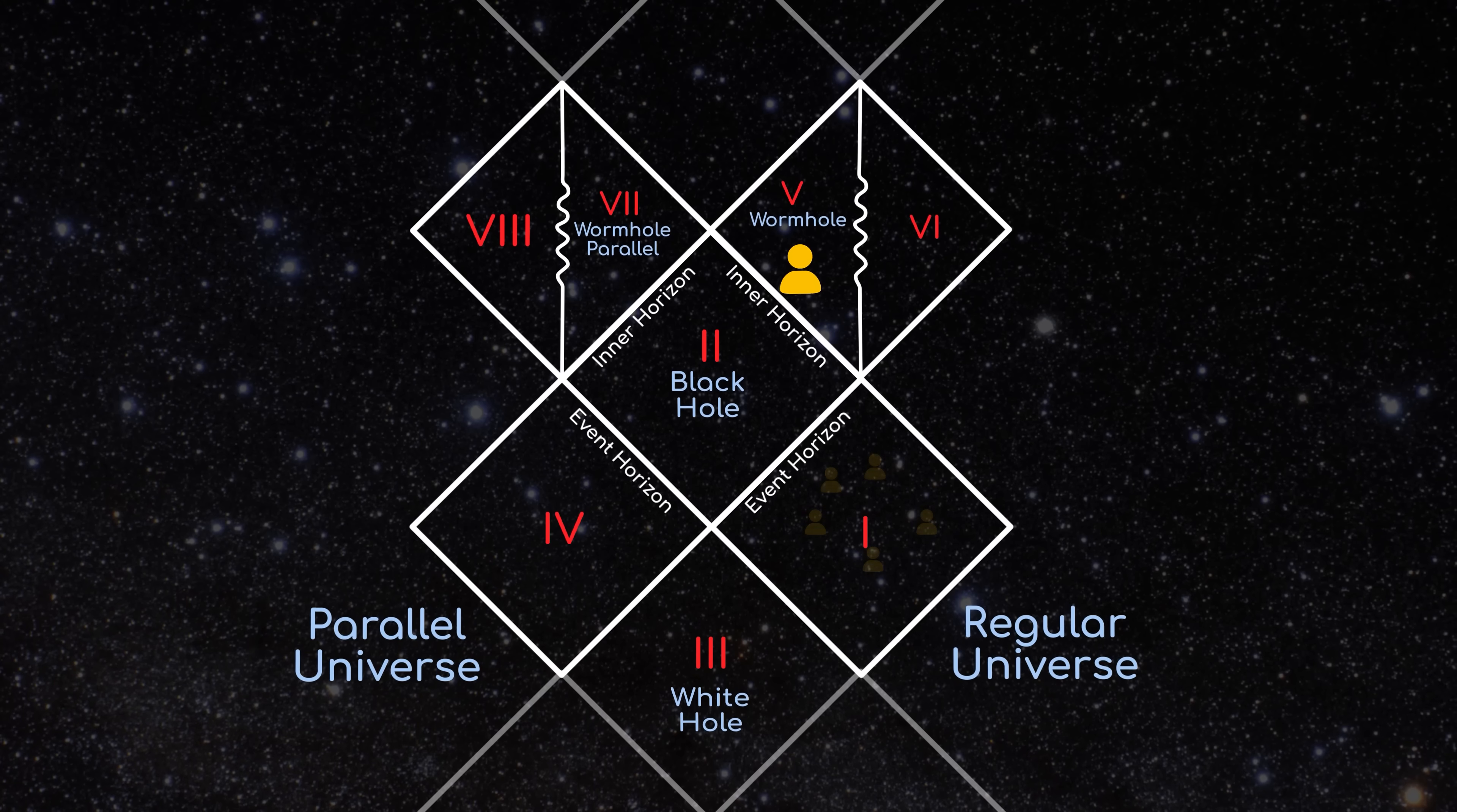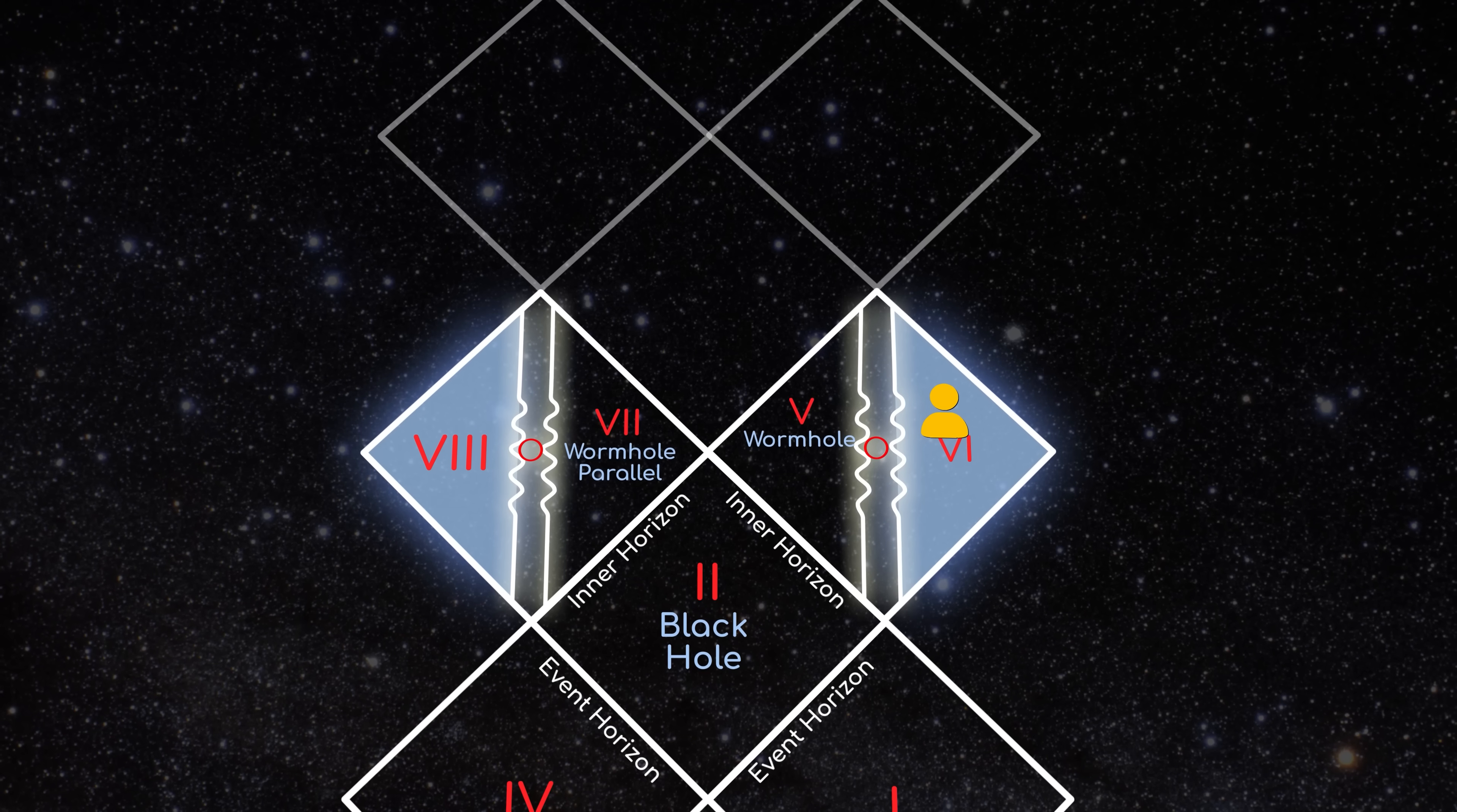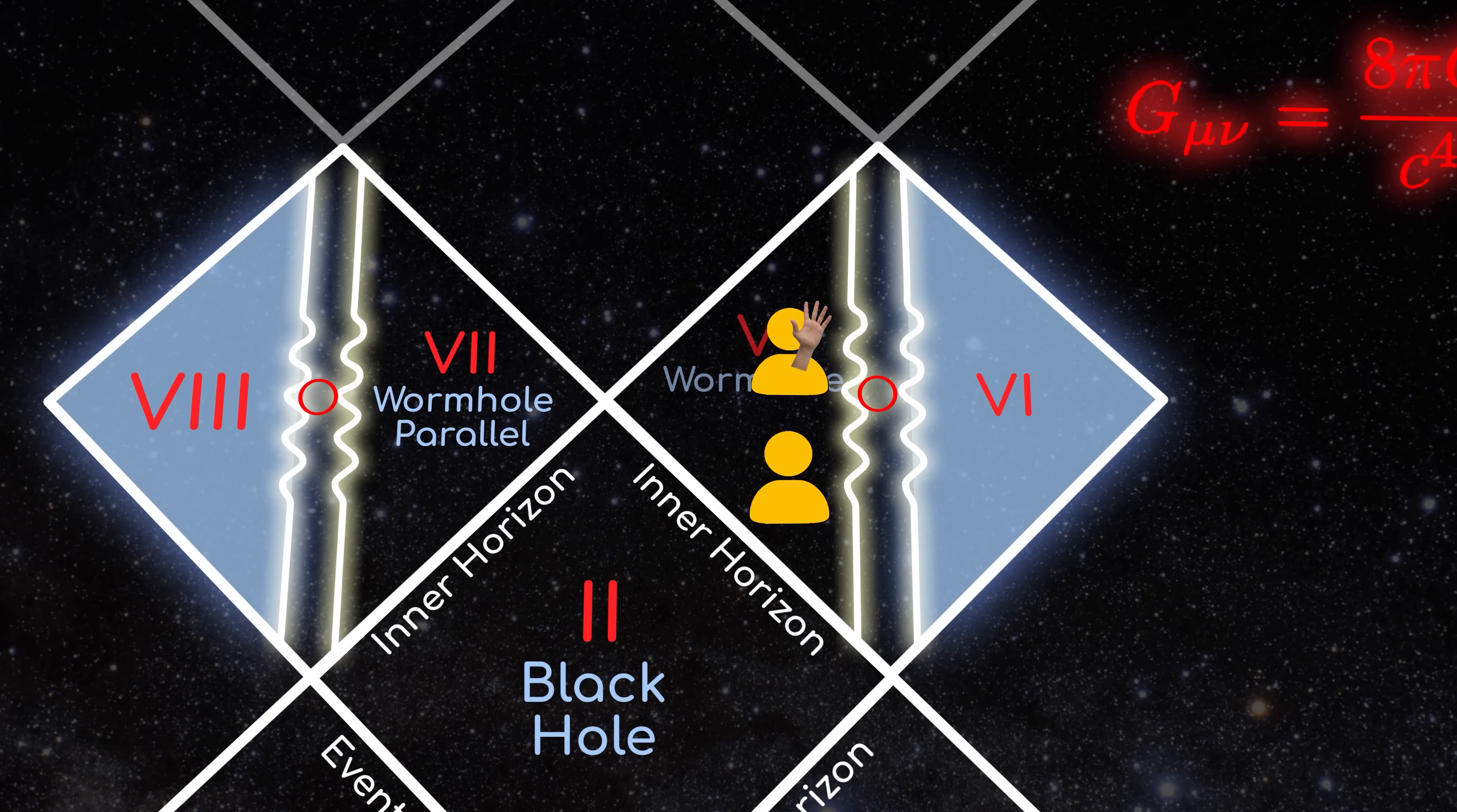At this point, you're also faced with a bit of a fork in the road. One option is to keep moving inward and go around the singularity, which takes the shape of a ring instead of a point for spinning black holes. This path would take you to Region 6 or 8 in the diagram. But it's quite possible that the existence of this path is actually a flaw in the predictions of general relativity, rather than a true description of reality, because going even in a single loop around the singularity can lead to causal paradoxes where you visit your own past.